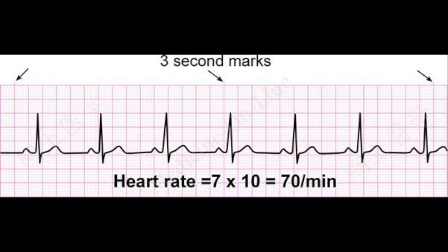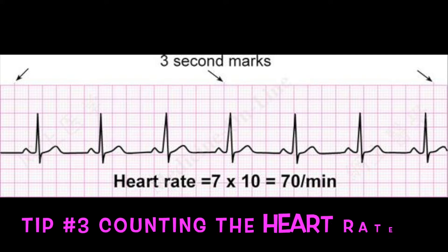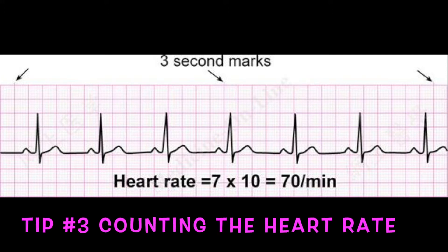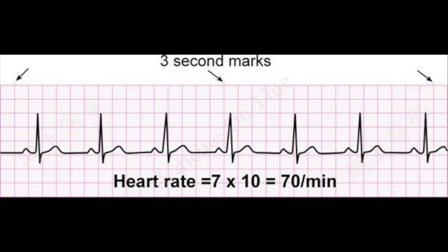Let's put these two concepts together. In this picture, you can definitely see all three waves clearly laid out in front of you. You have a P-wave that precedes a QRS-wave, therefore you know you have a sinus rhythm. If you count the number of boxes from the left arrow to the right, you have a total of 30 big boxes.